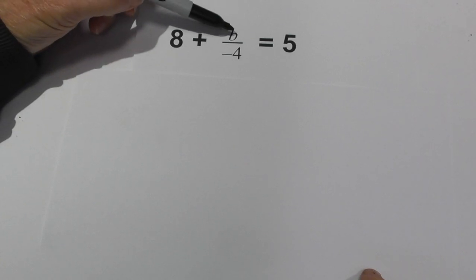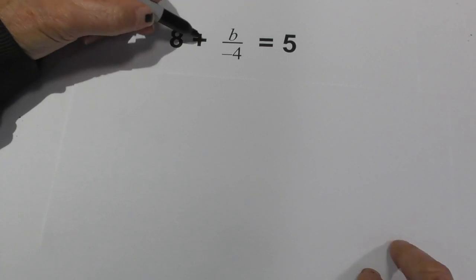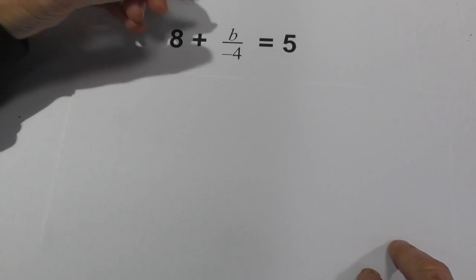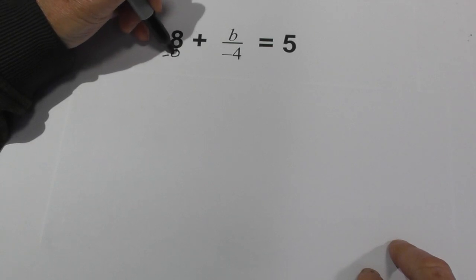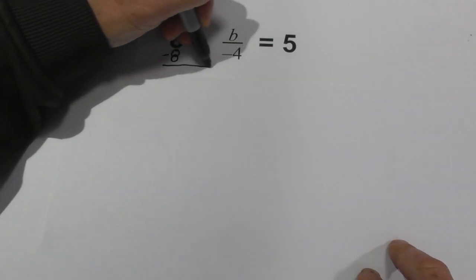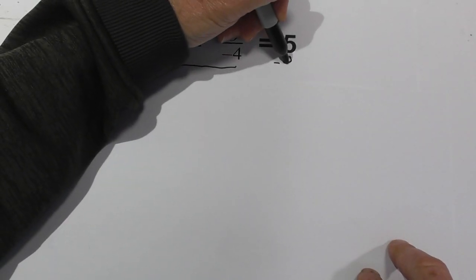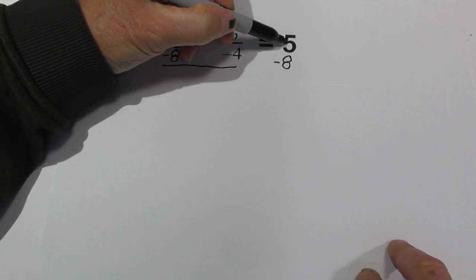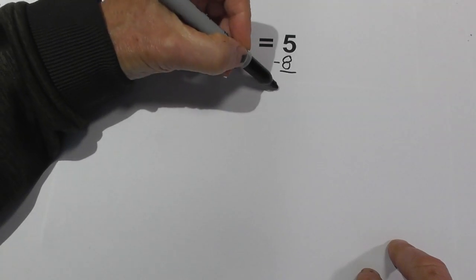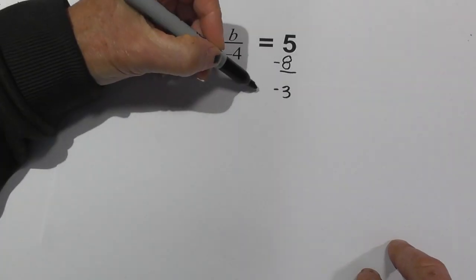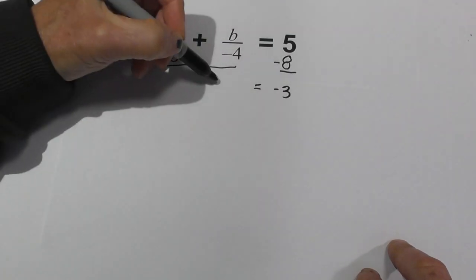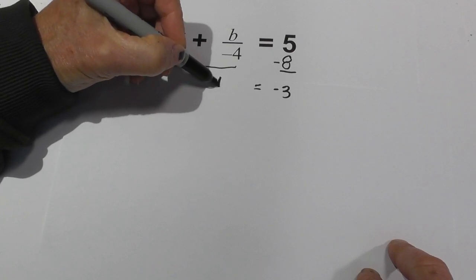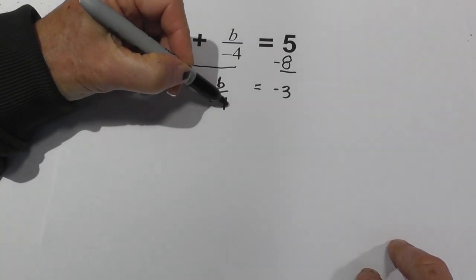Let's first try to isolate the variable, and it's not written as an x, it's written as a b. So in order to do this we can complete a reverse operation and subtract 8 from both sides. Okay, so let's work over here: negative 8 plus positive 5 equals negative 3. These cancel and you have b over negative 4.